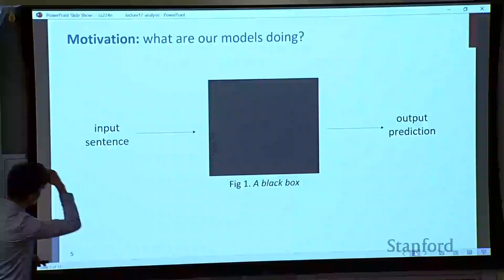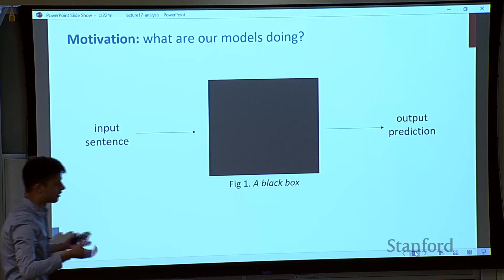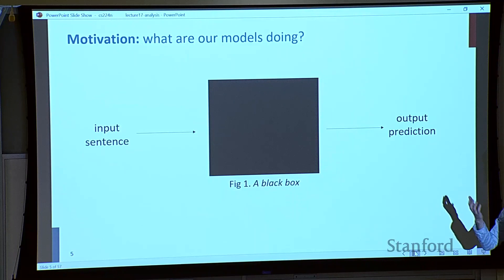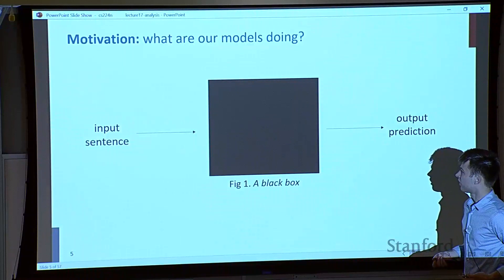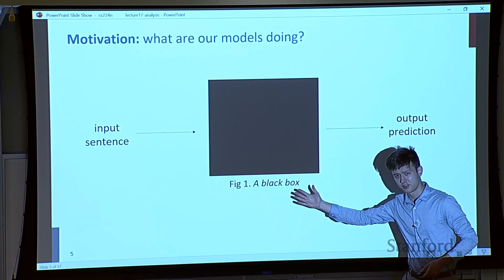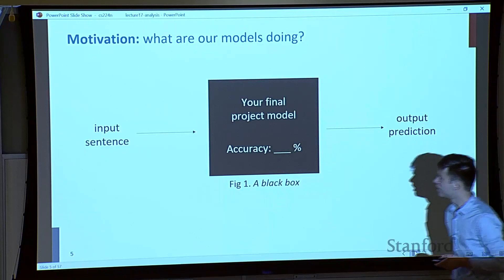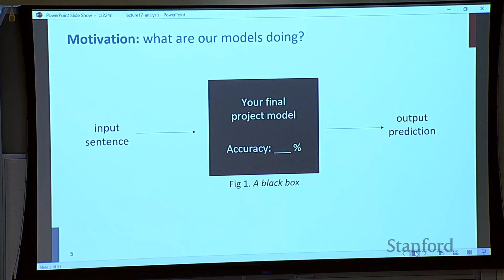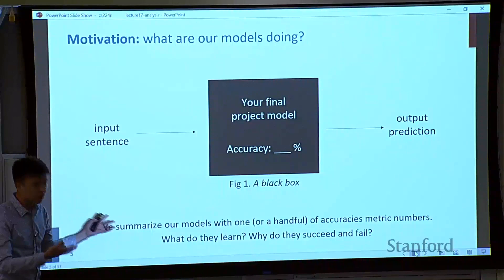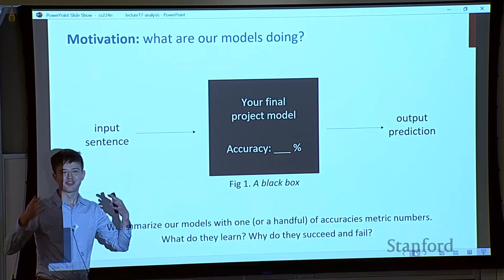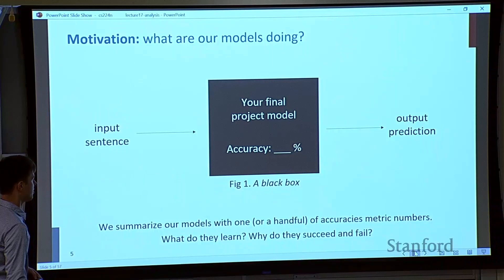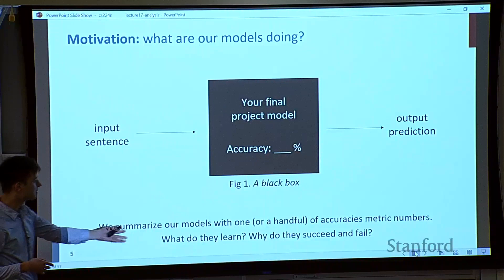Beyond the XKCD comic, why should we care about understanding our models? One reason is that we want to know what our models are doing. You have a black box — you can't look into it and interpret what it's doing. You have an input sentence and some output prediction. Maybe this black box is your final project model and it gets some accuracy. We summarize models with a handful of summary metrics like accuracy, F1, or BLEU score, but it's a lot of model to explain with just a small number of metrics. What do they learn? Why do they succeed? Why do they fail?